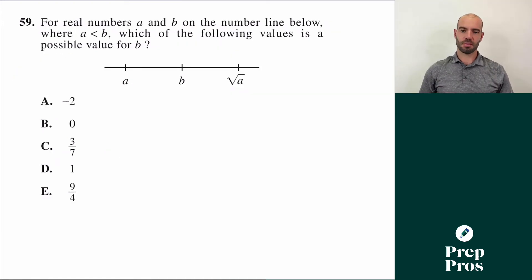Coming at number three on my rankings is number 59 here. This one says for the real numbers A and B on the number line below where A is less than B, which of the following is a possible value for B? This one's kind of tricky, because we have the square root of A over here is bigger than our value of A over here.